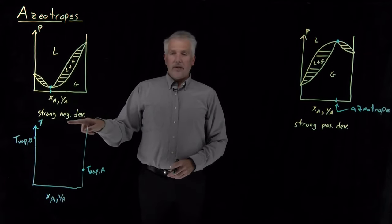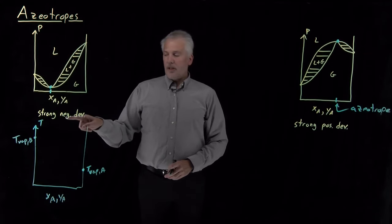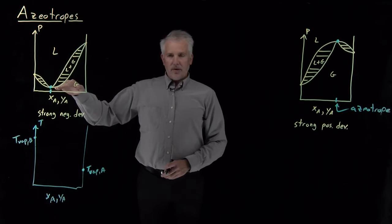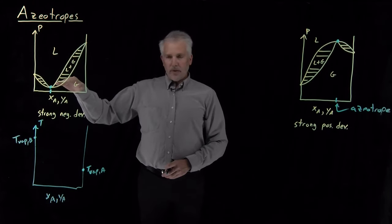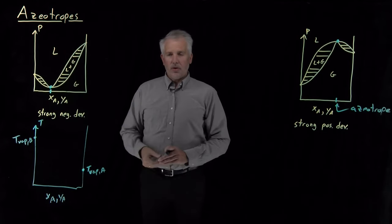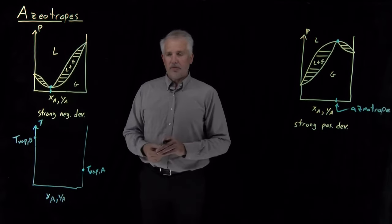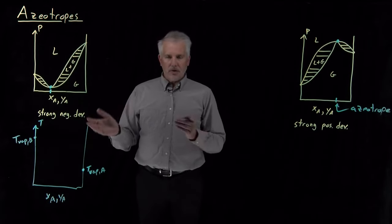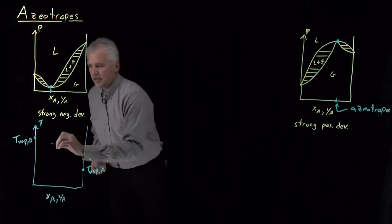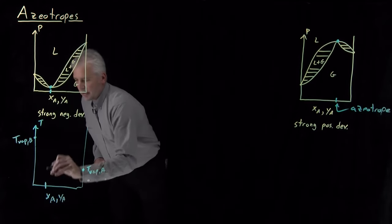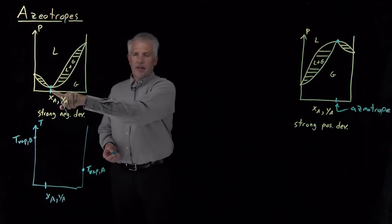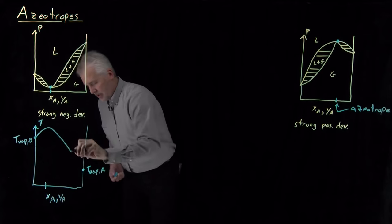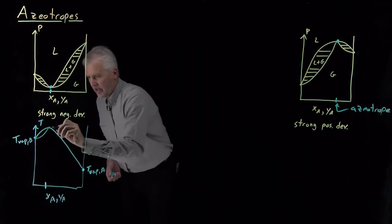For a system with strong negative deviations from Raoult's law, remember that negative deviations describe deviations in the pressure. When the pressure deviates in the negative direction, decreasing the vapor pressure, we have to heat the system up higher in order to boil it and get the pressure up to atmospheric pressure. So it exhibits positive deviations in temperature — pressure and temperature act inversely. At that same azeotropic composition, instead of a minimum in vapor pressure, we get a maximum in the boiling point.